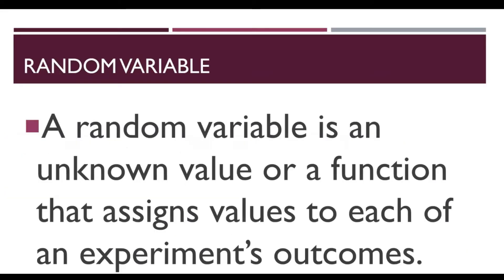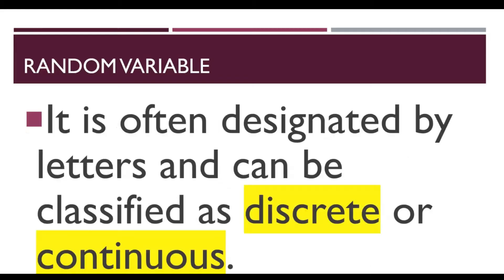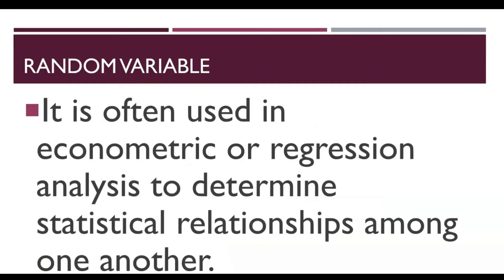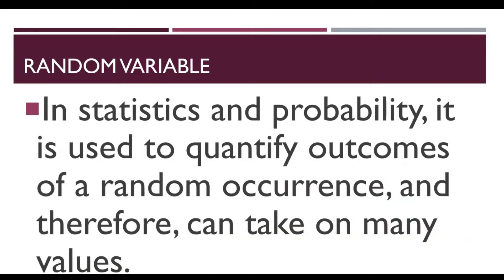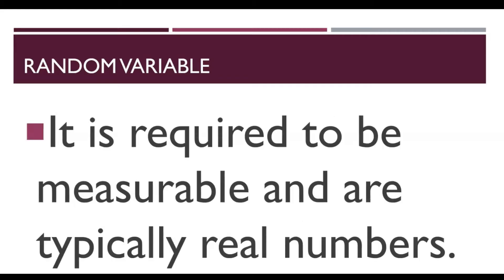What is a random variable? A random variable is an unknown value or a function that assigns values to each of an experiment's outcomes. It is often designated by letters and can be classified as discrete or continuous. It is often used in econometric regression analysis to determine statistical relationships among one another. In statistics and probability, it is used to quantify outcomes of a random occurrence and therefore can take on many values. It is required to be measurable and are typically real numbers.